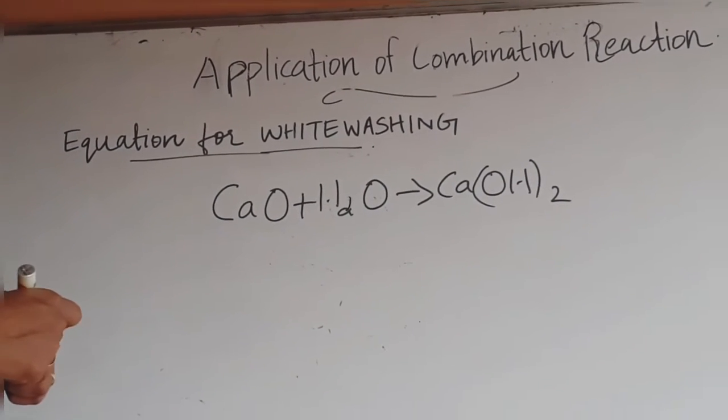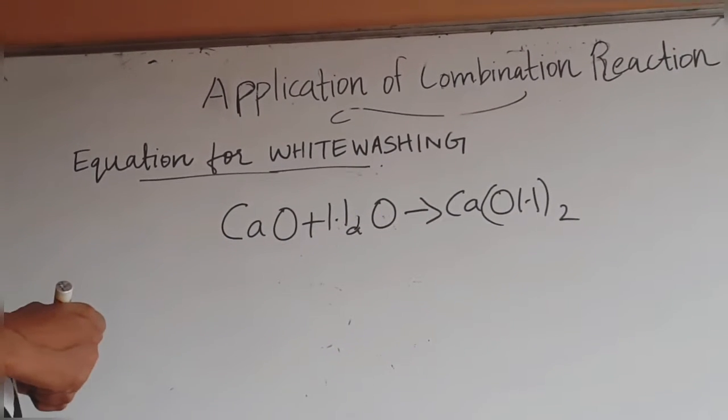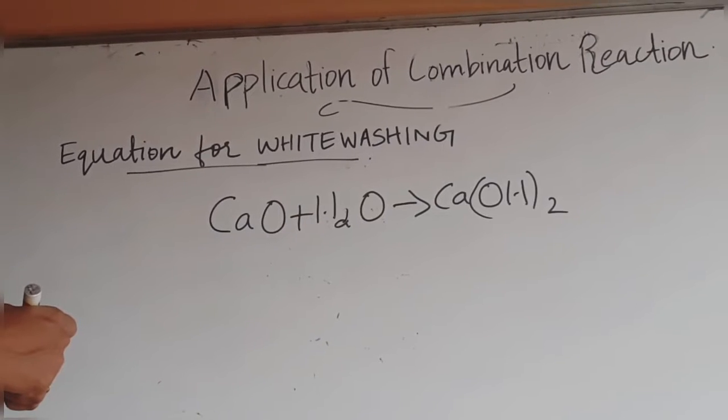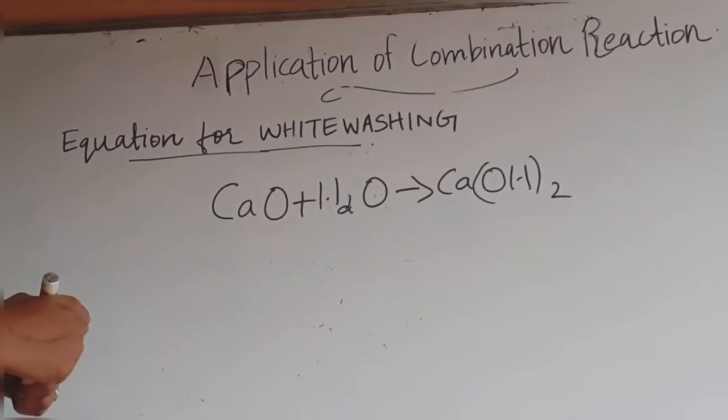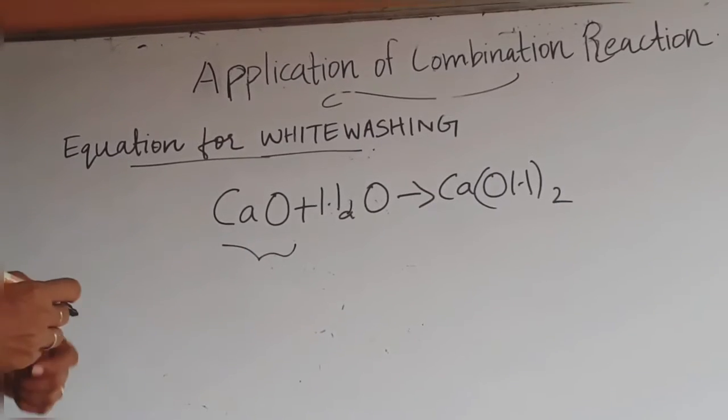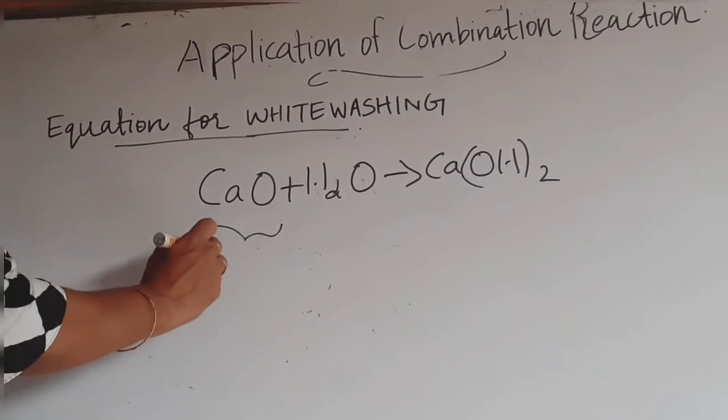Now let us learn the equation for whitewashing. What is the compound that is used for whitewashing? The compound used for whitewashing is calcium oxide. Calcium oxide is otherwise known as quicklime.